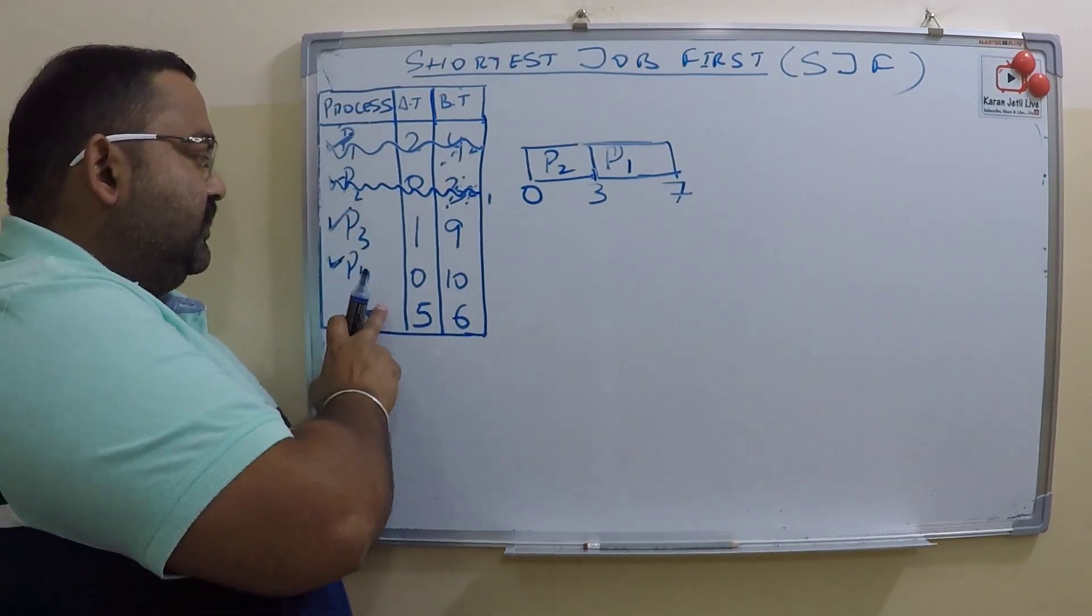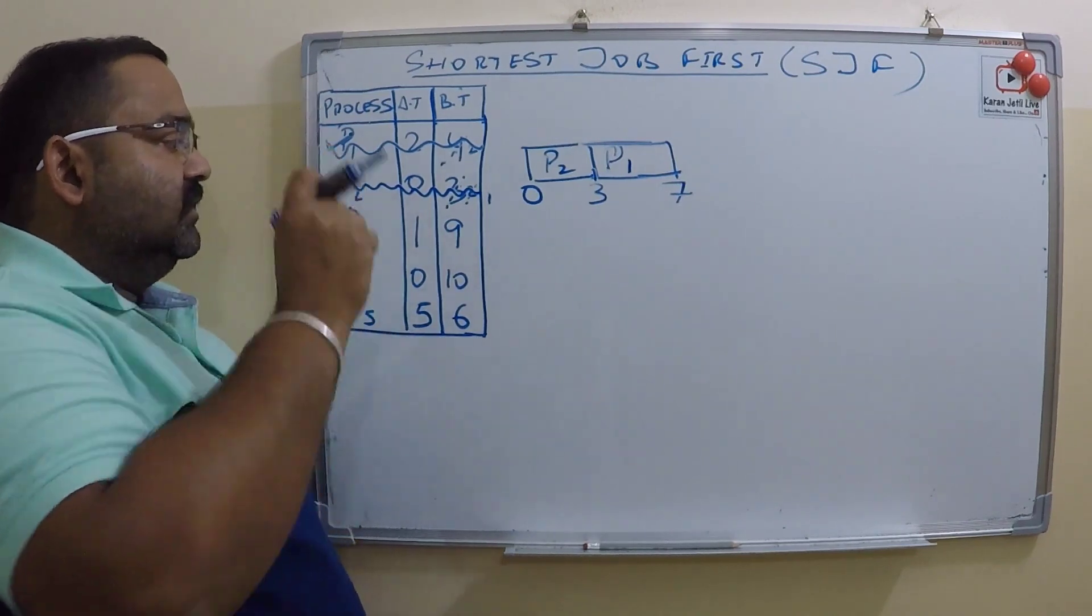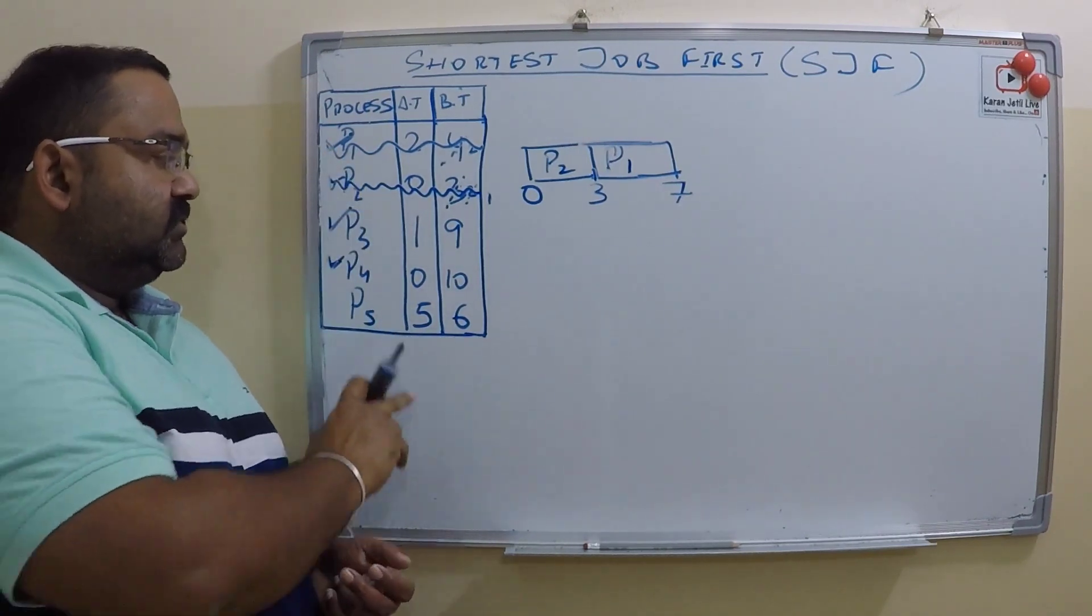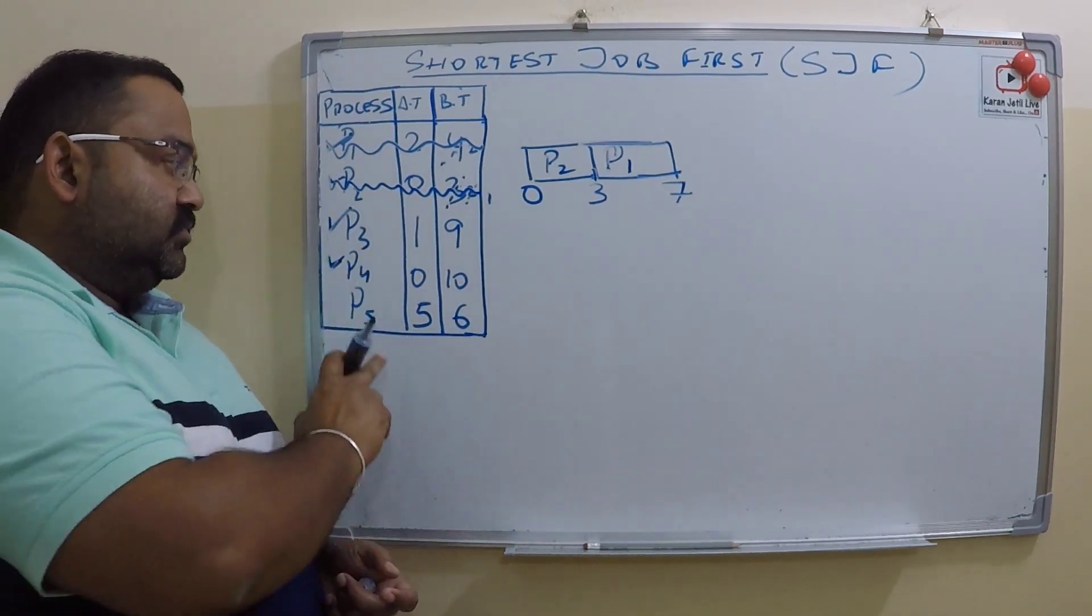That is P5, P4, and P3. Now which has the smallest burst? P5 has the smallest burst.